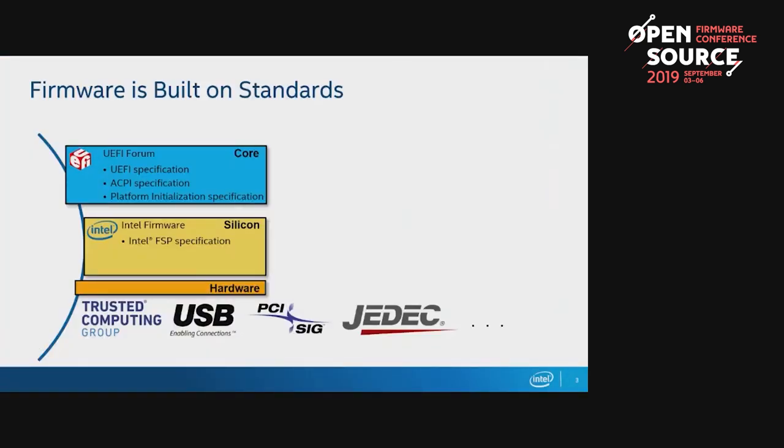On the silicon side, we have the Intel Firmware Support Package specification, which allows us to distribute our silicon code so you can call into the silicon APIs and reliably initialize the silicon. The parameters — what we call UPDs — configure what the FSP does, and that's part of the integration guide we ship. On the hardware side, we write tons of firmware that works generation over generation with multiple hardware vendors because of hardware specifications. But we don't really have anything equivalent on the platform side, which is left in the wild in terms of how people bring all these pieces together.